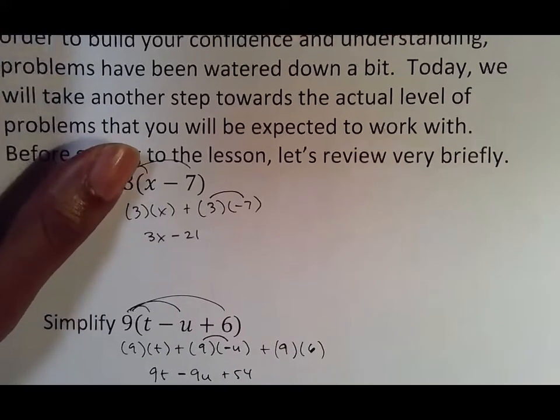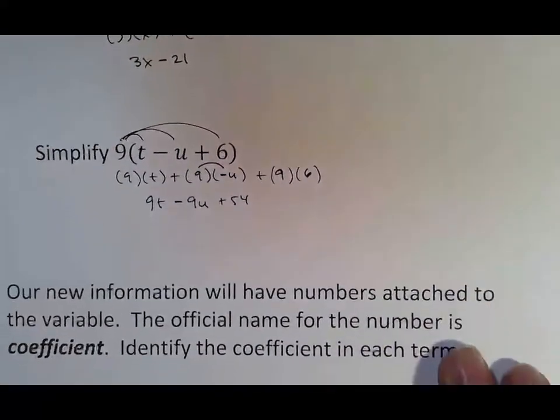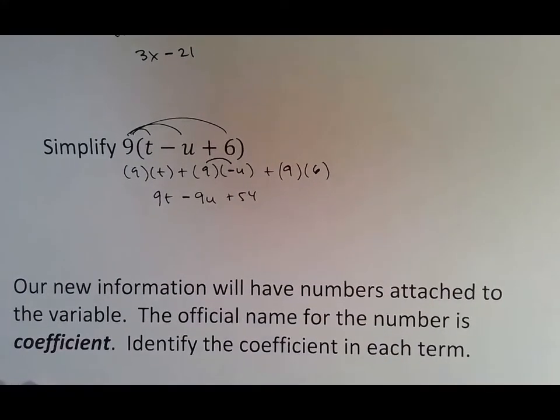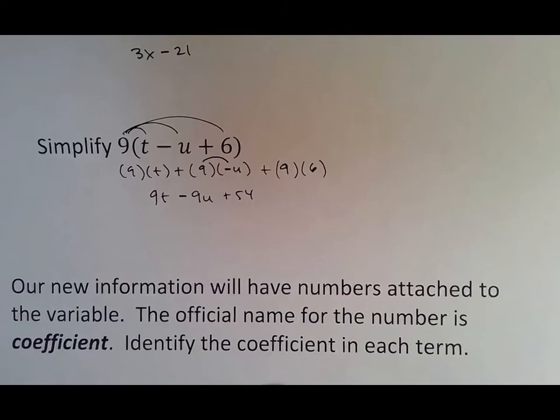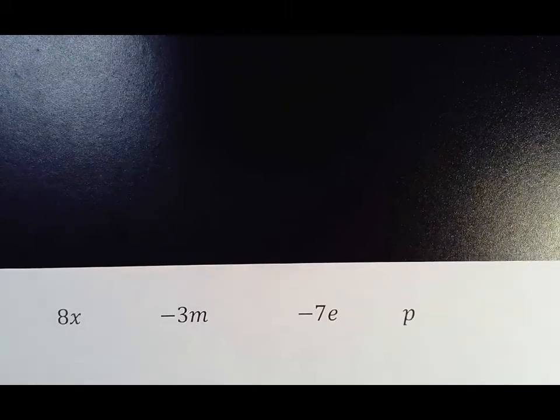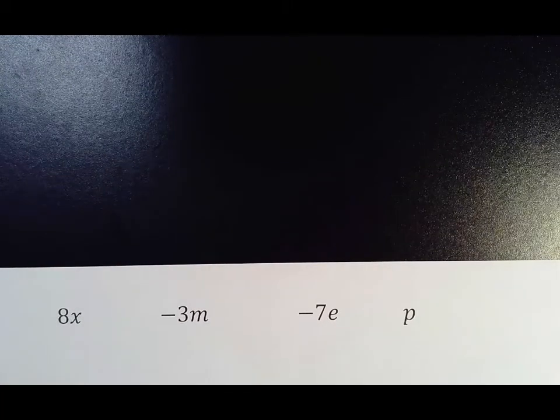Our new information will have numbers attached to the variable. The official name for that number is a coefficient. Take a second and see if you can identify the coefficient in each of these terms. The coefficient is the number attached to the variable.